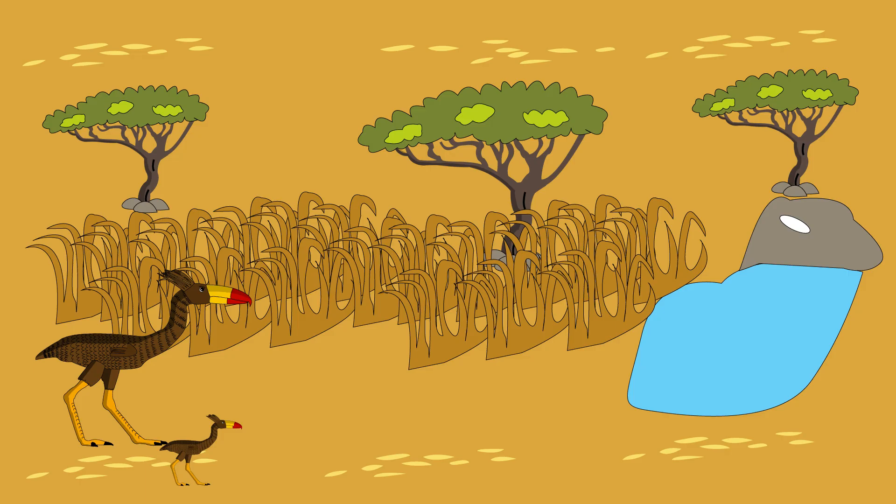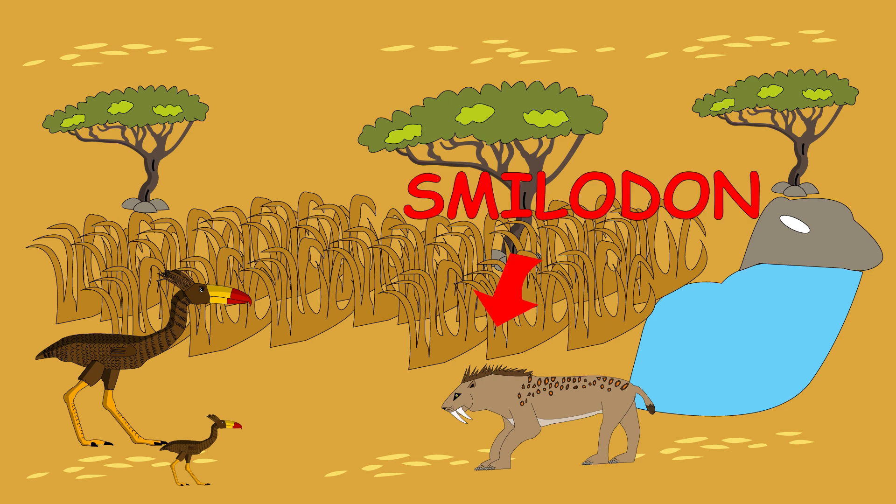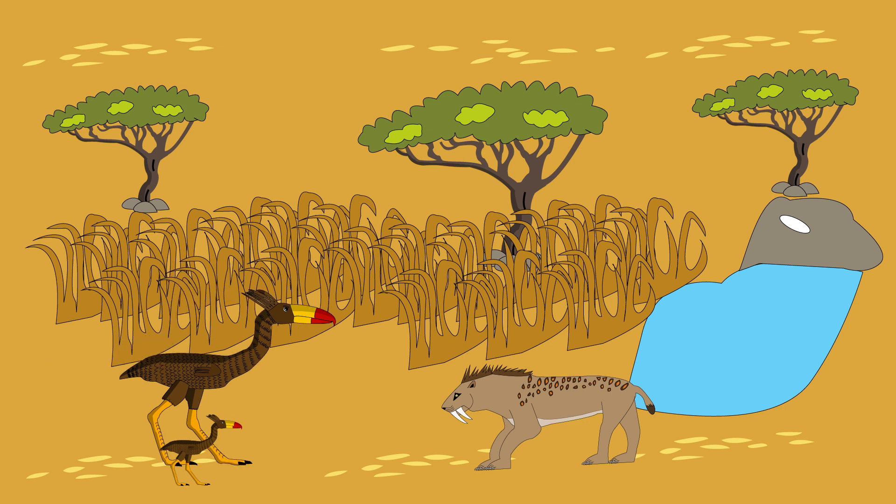Then comes your first real test. A shadow moves in the tall grass. Massive, sabre-shaped teeth, fur that ripples. Not a jaguar, not a bear. It's a smilodon, a sabre-toothed cat. Prehistoric nightmare with knives for teeth and a bad attitude.